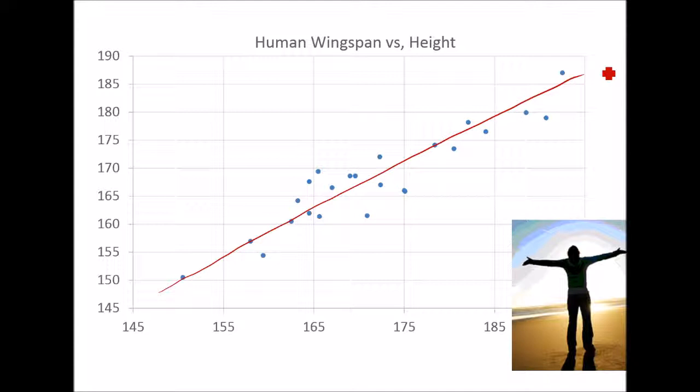And there are, of course, exceptions and variations. We can see some people that deviate more from this trend line. But in general, we can see that as one of those numbers goes up, the other goes up with it.